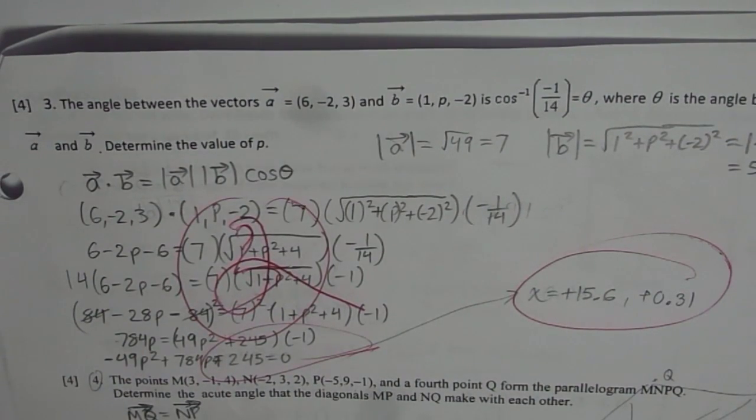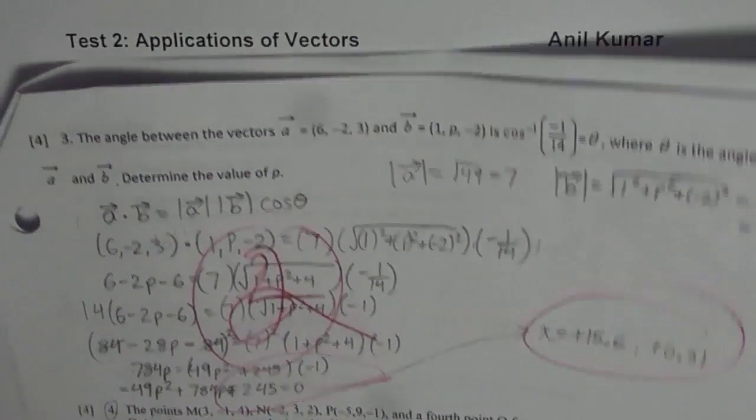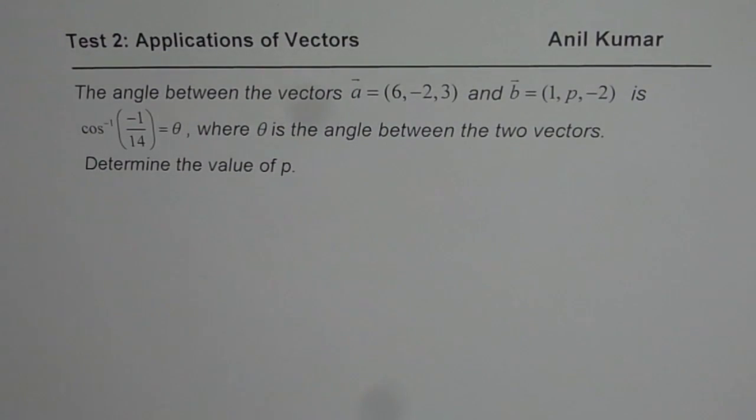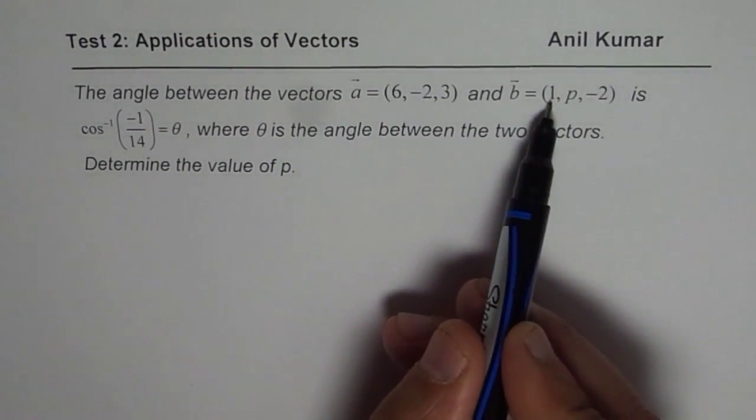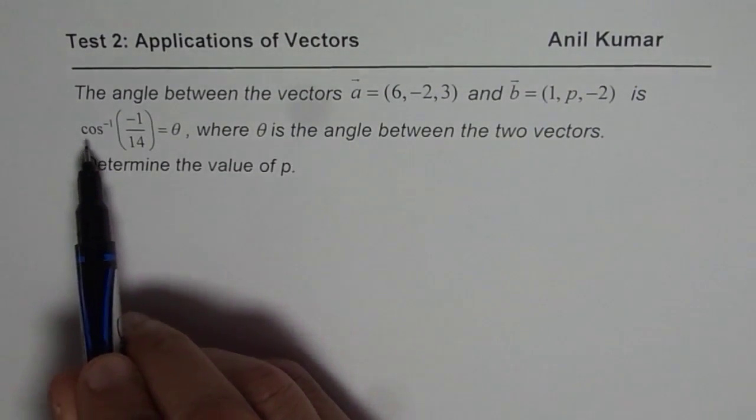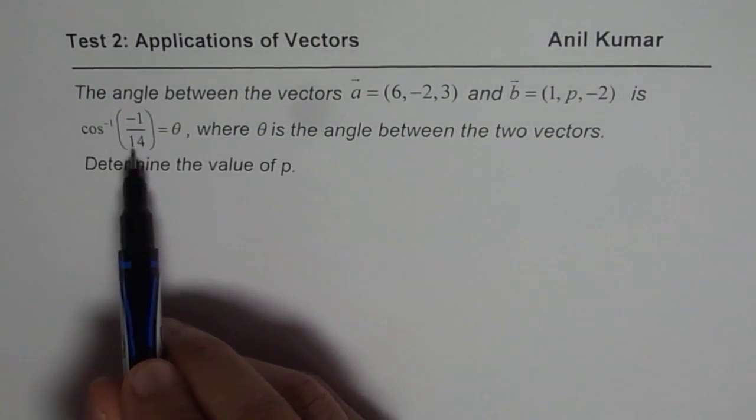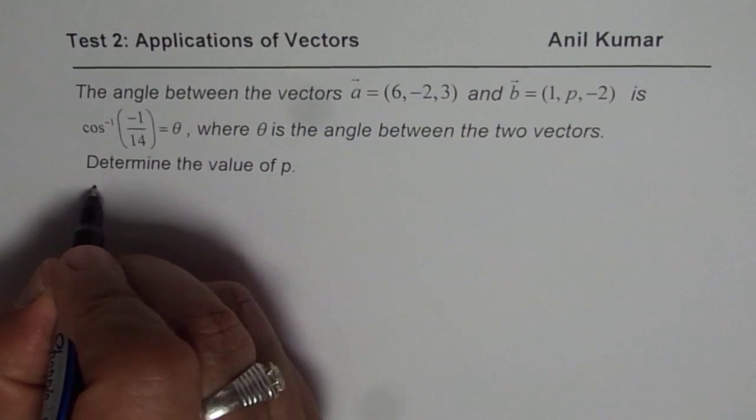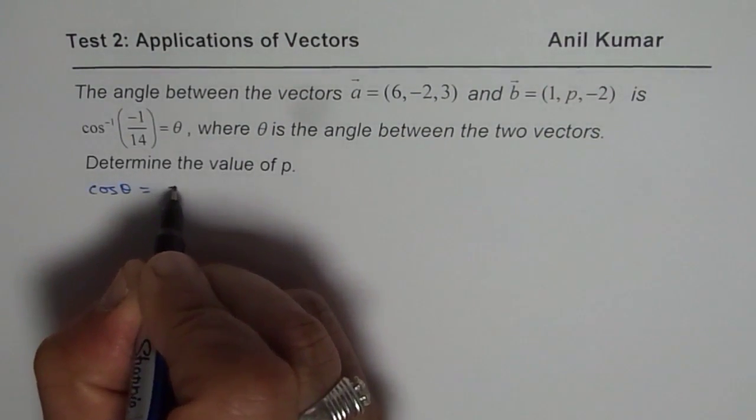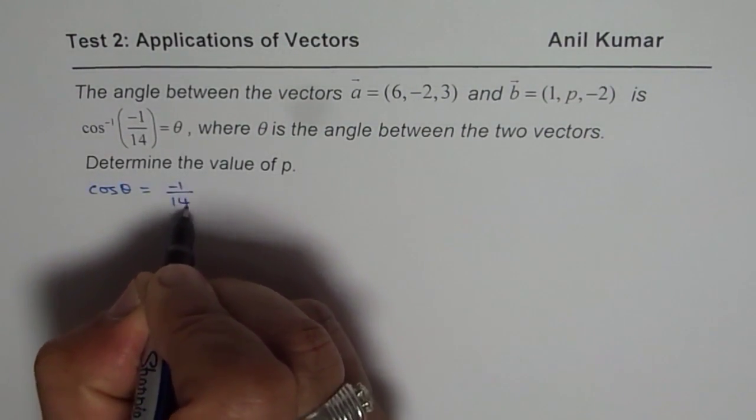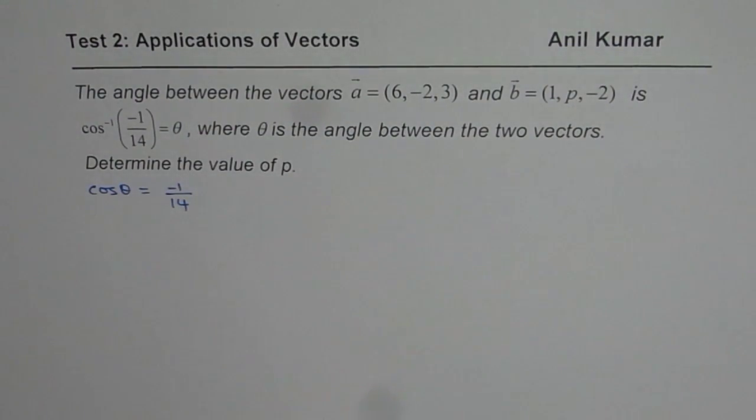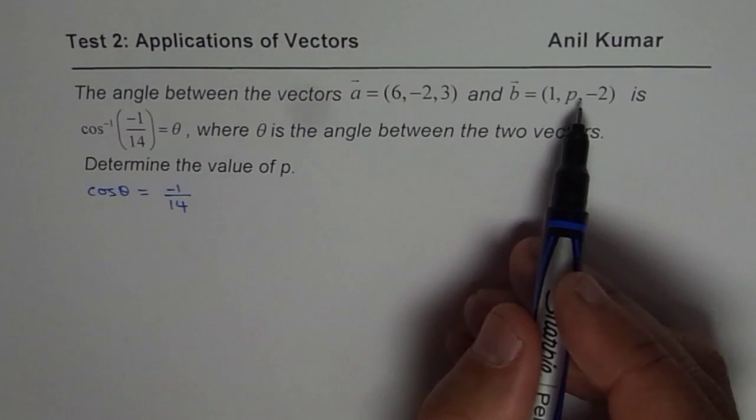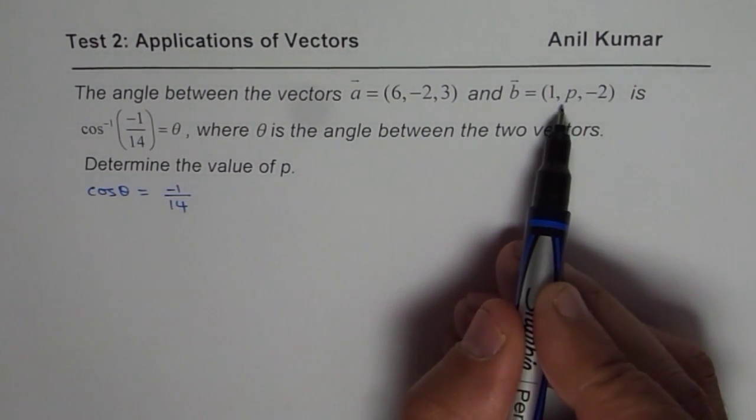Let us look into the solution of this question in details. We are given the angle between these two vectors, so cos theta is -1 over 14. We can write cos theta equals -1 over 14. When we say theta is cos inverse of -1 over 14, we can always write cos theta equals -1 over 14. We know the two vectors, we need to find the value of p.